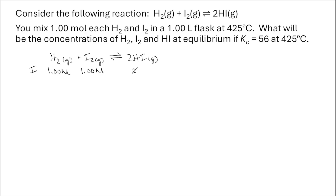The next thing I'm going to include in my chart — the C in ICE — is the change in these concentrations. We know that this reaction is going to proceed from left to right to reach equilibrium, because I'm starting with only reactants and no products. But I don't know specifically how these values are going to change, so I'm going to report my change in terms of x, some unknown amount, and use the stoichiometry of the reaction to consider the relative changes in concentrations of both my reactants and products.